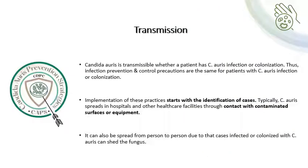Regarding transmission, Candida Auris is transmissible whether a patient has infection or colonization. Thus, infection prevention and control precautions are the same for patients with Candida Auris infection or colonization. Implementation of these practices starts with the identification of cases. Candida Auris typically spreads in hospitals through contact with contaminated surfaces or equipment, and it can also spread from person to person, as colonized cases can shed the fungus.